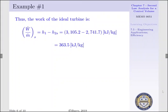Thus, the ideal work of our turbine, which is H1 minus H2S, is the difference of these two enthalpy values. And our work per mass flow rate of our ideal turbine is found to be 363.5 kJ per kg.